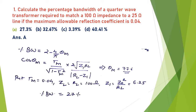First question: calculate the percentage bandwidth of a quarter wave transformer. We have to find the percentage bandwidth. The load impedance is 100 ohm, the line characteristic impedance is 25 ohm, and the minimum allowable reflection coefficient is τm = 0.04. The equation of bandwidth for a quarter wave transformer is: fractional bandwidth = 2 − (4/π) × θm.